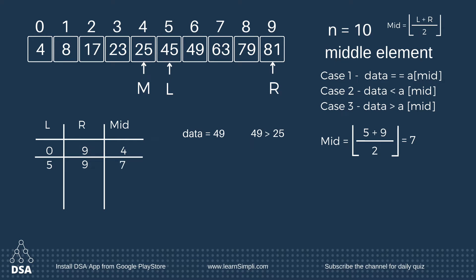Now the middle value will be moved here. Again it might be one of the three cases. Checking the data: 49 is less than 63, so it is in the second case. We can say that the data is present to the left of the middle value.